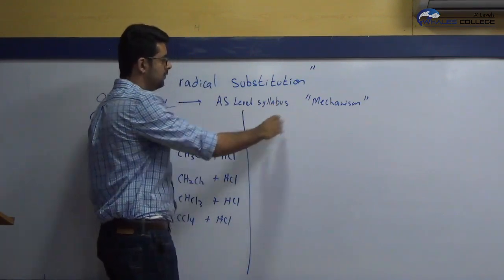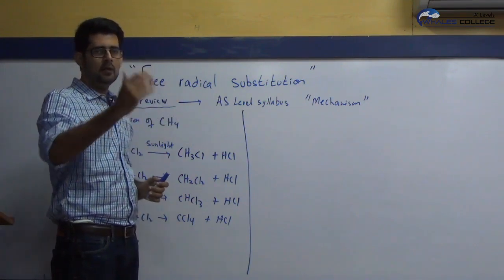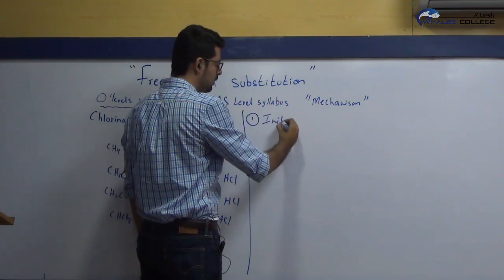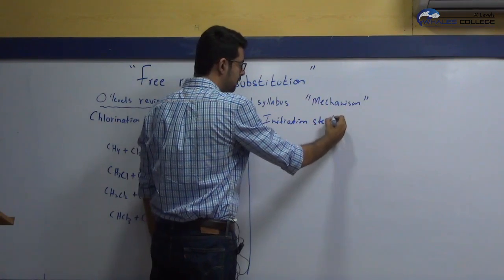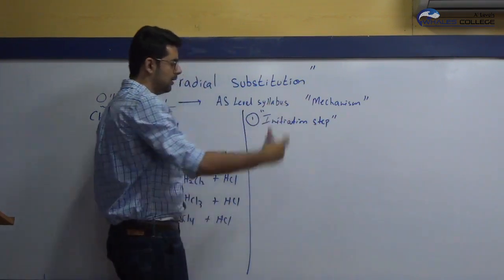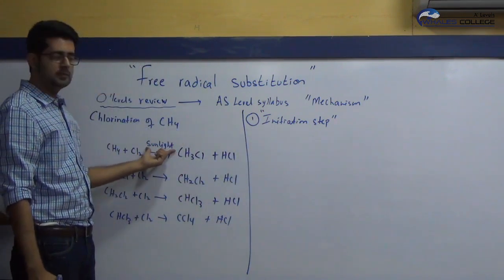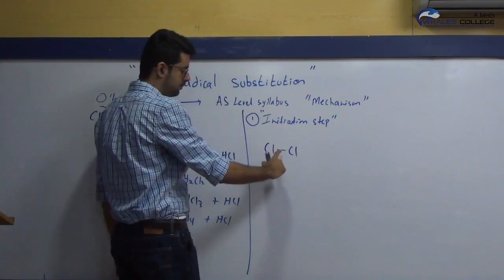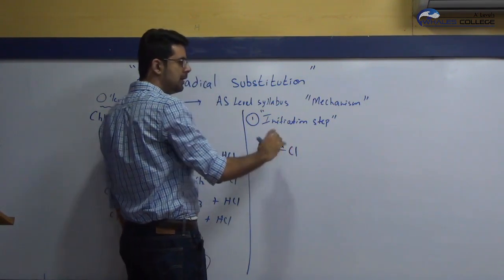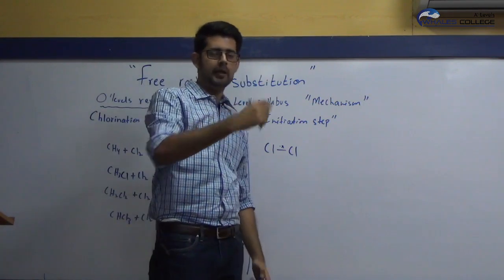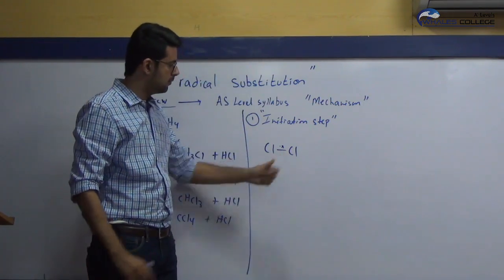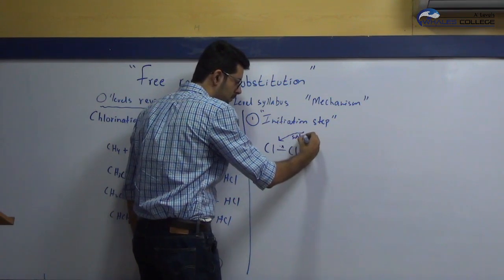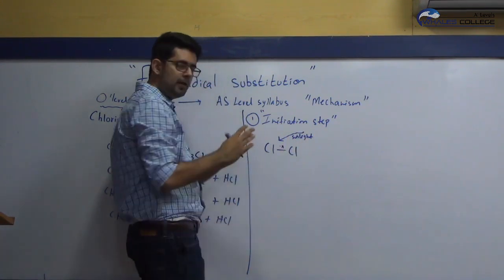The mechanism for substitution reaction involves three different parts. The first is called the initiation step. As the name suggests, initiation means starting, and here the role of sunlight is highlighted. The chlorine molecule requires a bond energy of around 244 kJ per mole — you can check this in the data booklet. Sunlight provides that bond energy to break this covalent bond.